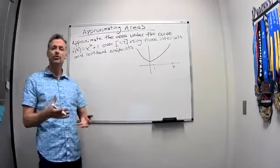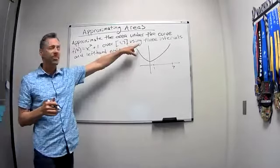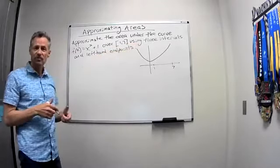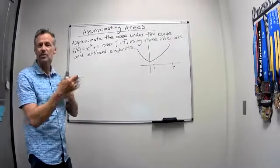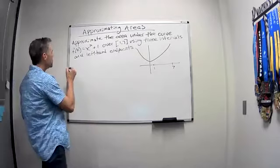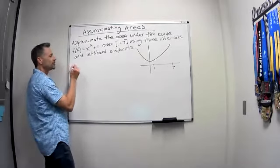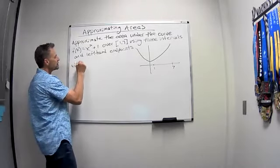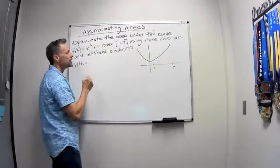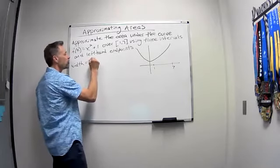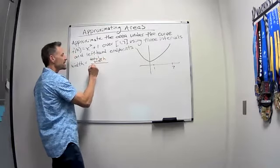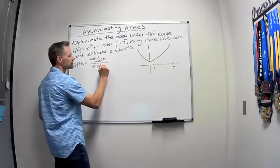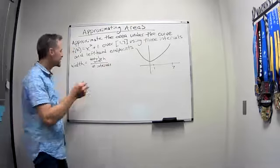The idea here is I want to draw three intervals or sub-intervals over those with left-hand endpoints. So first, let's see how wide each interval is going to be. You may just do that in your head, but each interval, the width, is going to be the total width divided by the number of intervals. And so in this case,